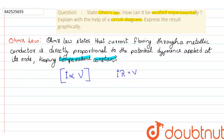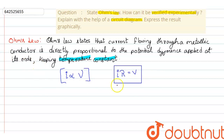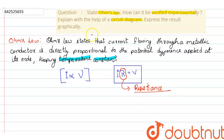If we remove the proportionality sign, we have to write a constant R, giving us the formula V = IR, where R is the proportionality constant, also called resistance. Resistance is independent of V and I — it is a property of the material.